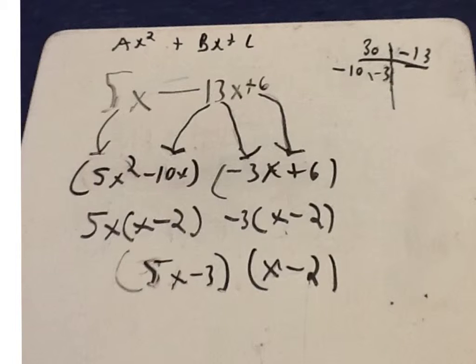Next you would have to group the first two terms then group the last two. For step number 4, you find the greatest common factor then factor them out.